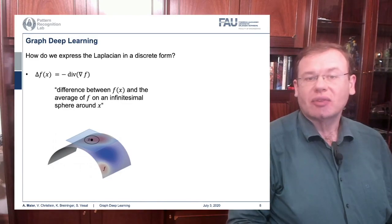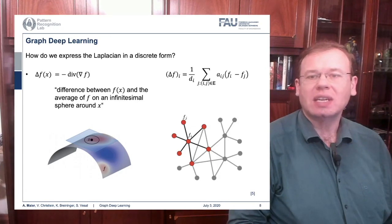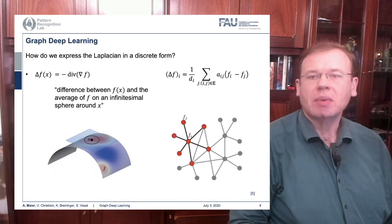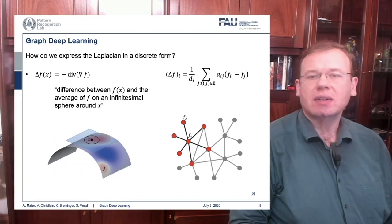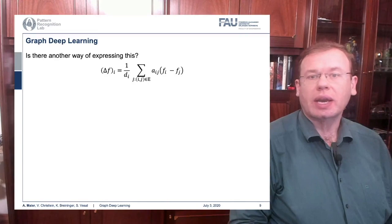Here you can see that the Laplacian is essentially the difference between f(x) and the average of f on an infinitesimally small sphere around x. Now how do we express the Laplacian in discrete form? It's the difference between f(x) and the average of f on an infinitesimal sphere around x — the smallest step we can take is to connect the current node with its neighbors. So we can express the Laplacian as a weighted sum over the edge weights a_ij.